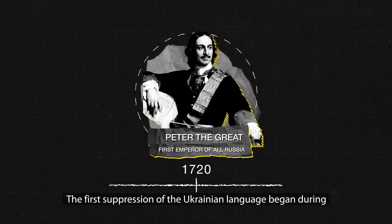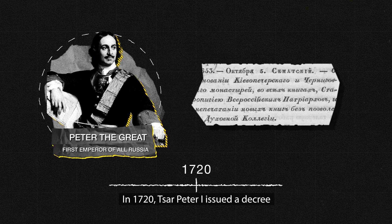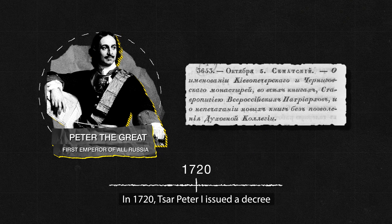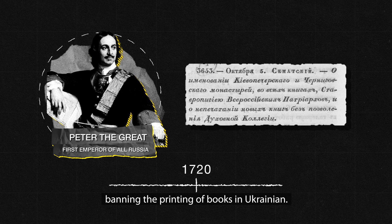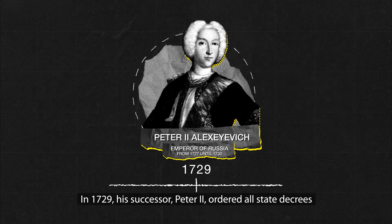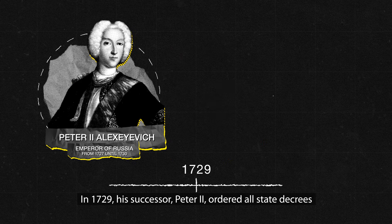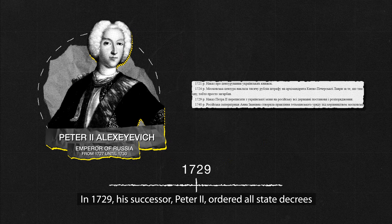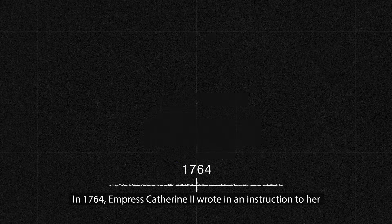The first suppression of the Ukrainian language began during the occupation of Tsarist Russia. In 1720, Tsar Peter I issued a decree banning the printing of books in Ukrainian. In 1729, his successor Peter II ordered all state decrees and orders to be rewritten from Ukrainian into Russian.